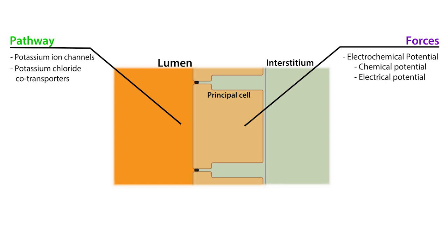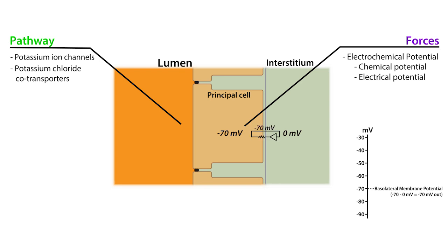The average intracellular electrical potential of a principal cell is about minus 70 millivolts, while the electrical potential of the interstitial fluid is zero. This means that the potential difference across the basolateral membrane is minus 70 millivolts, which is close to the potassium equilibrium potential of about minus 85 millivolts. The equilibrium potential represents the electrical potential where there is no net movement of potassium in or out of the cell. As the potential difference becomes less negative, it begins to favor the outward movement of potassium.